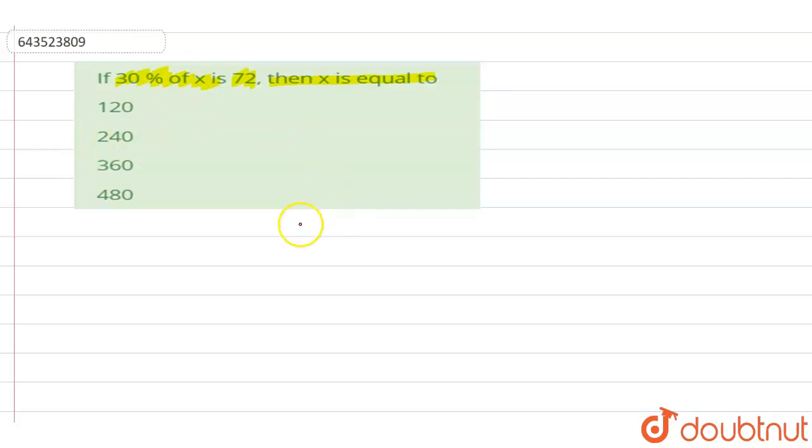So it is given that 30 percent of x is 72. If we write it mathematically, this will be 30 by 100 times x, which is equal to 72.